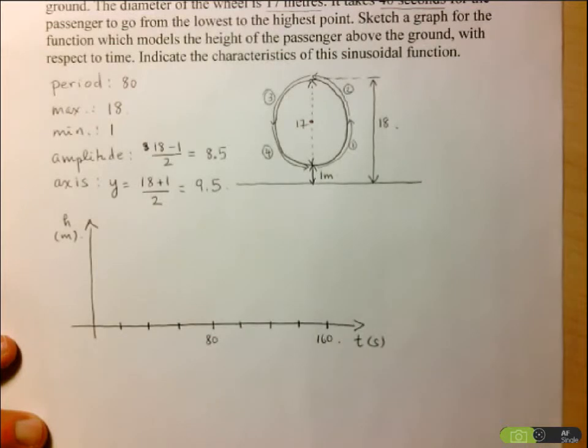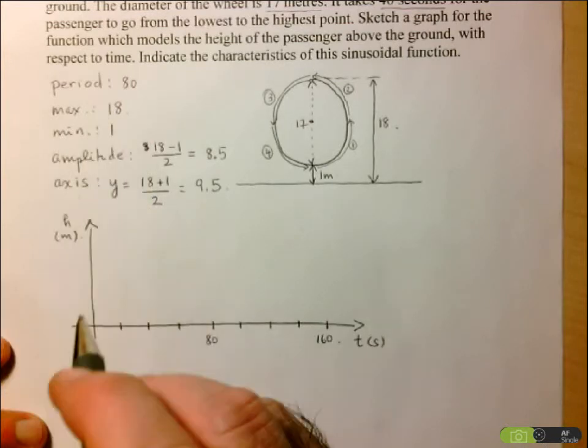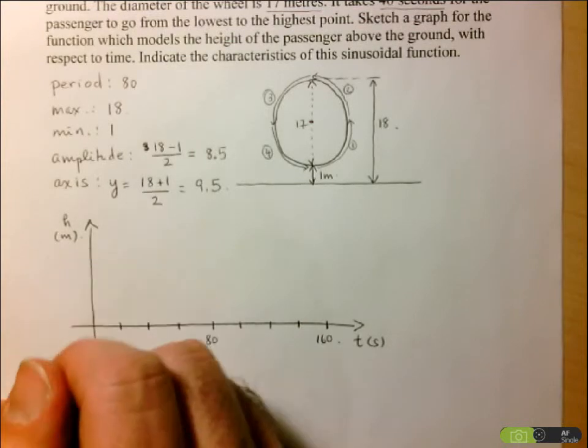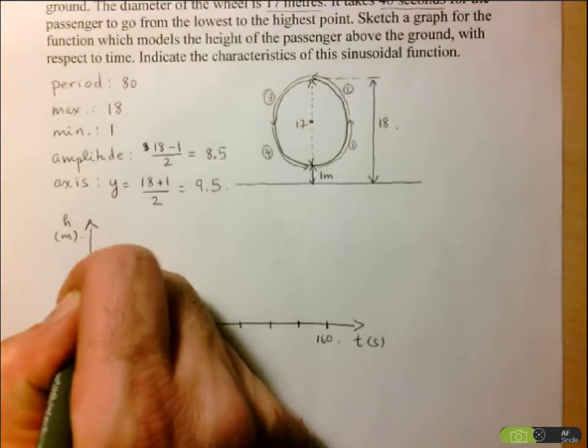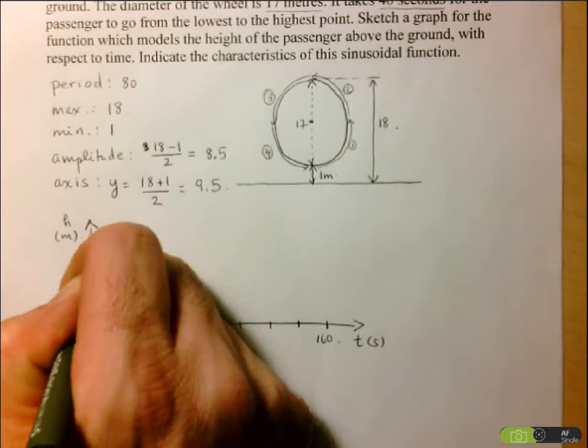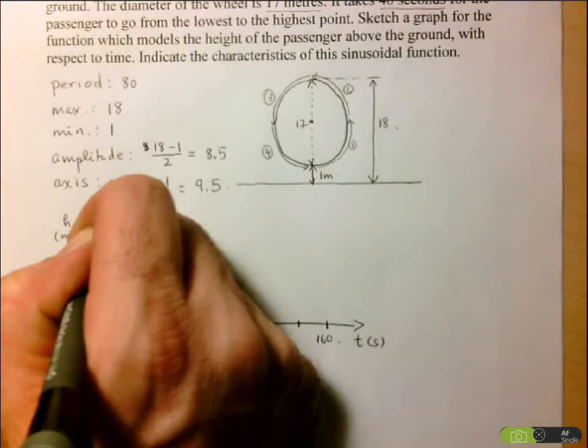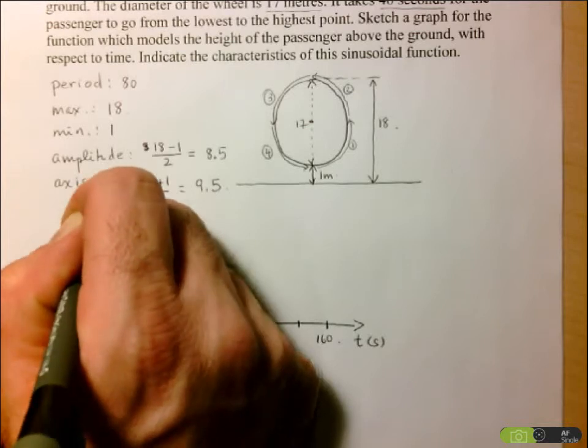Now let's take a look at my y-axis. So my minimum is one, and my maximum is 18. I think going up by one might be a little difficult, so I'm going to go up by two. So two, four, six, eight, ten, twelve, fourteen, sixteen, eighteen.